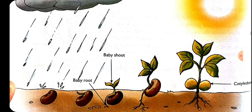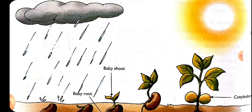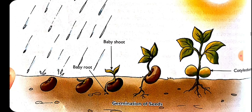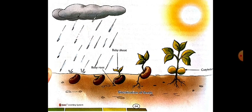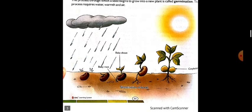You can see there is a sun which provides heat to this plant, and it also requires water and air, which it can take from the soil as well. So this is the process of germination of the seed.